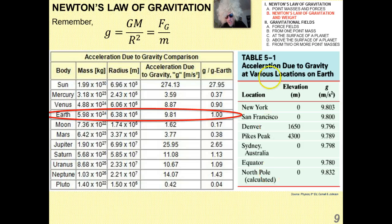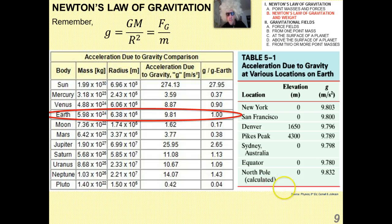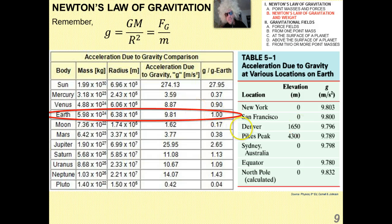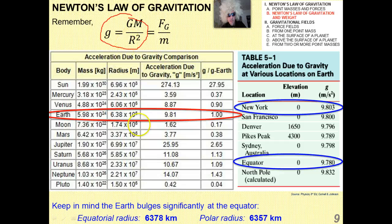The acceleration due to gravity is actually not constant on the surface of the Earth. Different locations are different distances from Earth's center — the Earth bulges at the equator. Standing on a mountaintop at the equator puts you as far from Earth's center as you can be on the surface. Elevation also plays a role: the acceleration due to gravity is a little lower on top of Pikes Peak at 4,300 meters than at lower elevations. The farther you get from Earth's center, the less the acceleration due to gravity, because R squared is in the denominator. The equatorial radius is significantly greater than the polar radius.